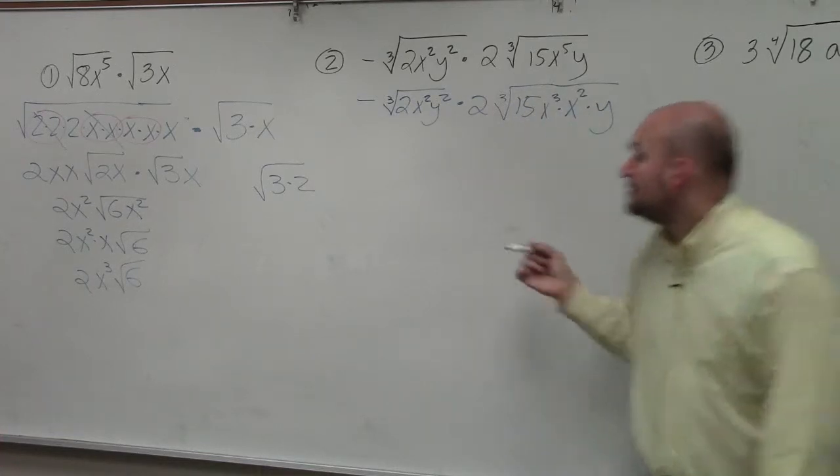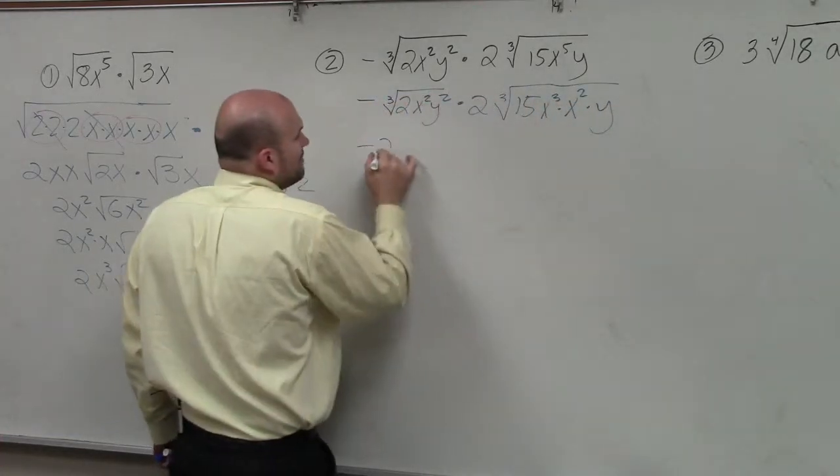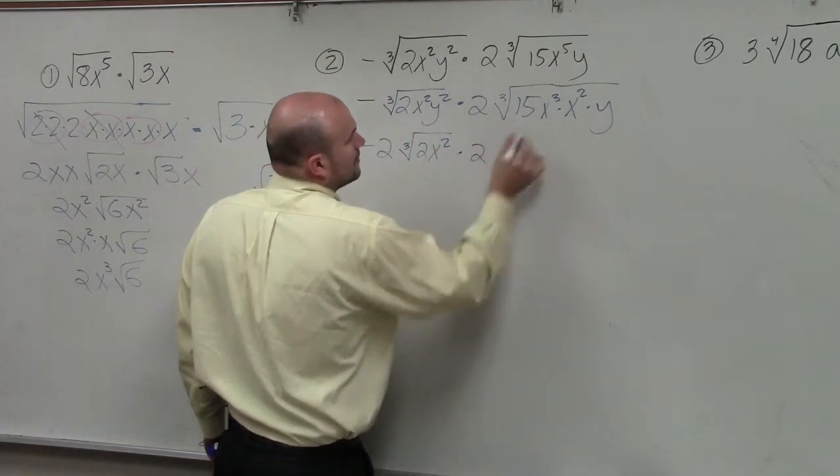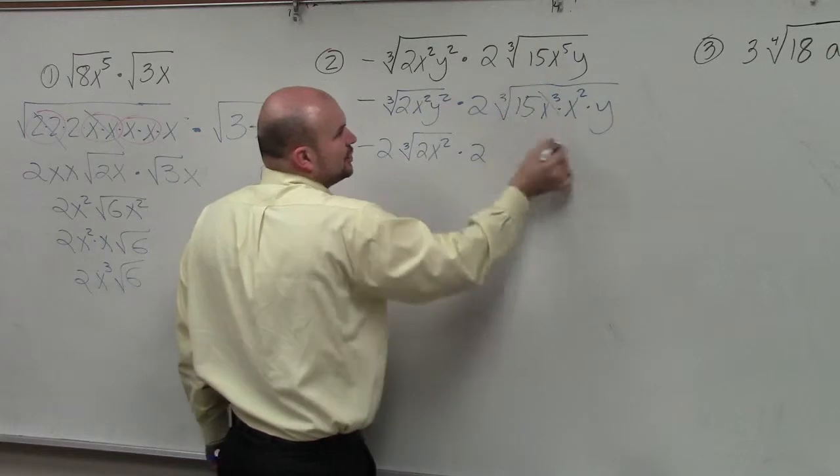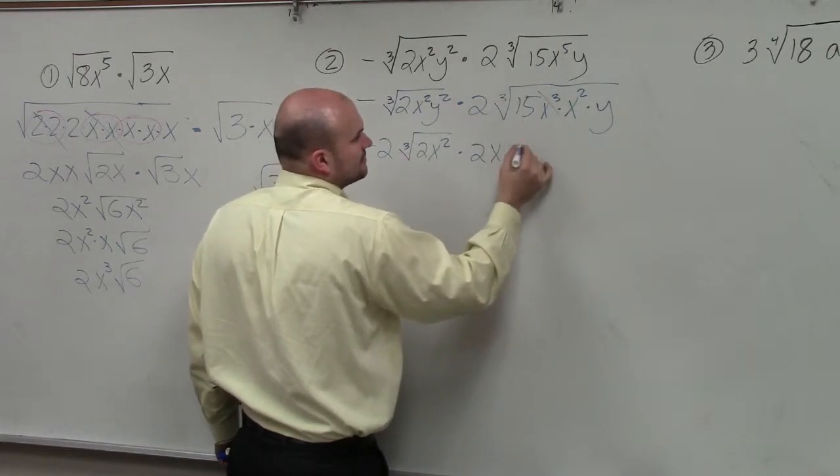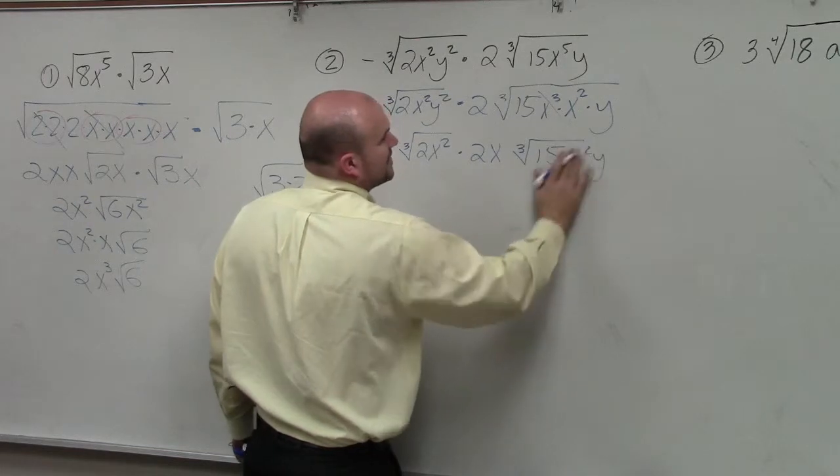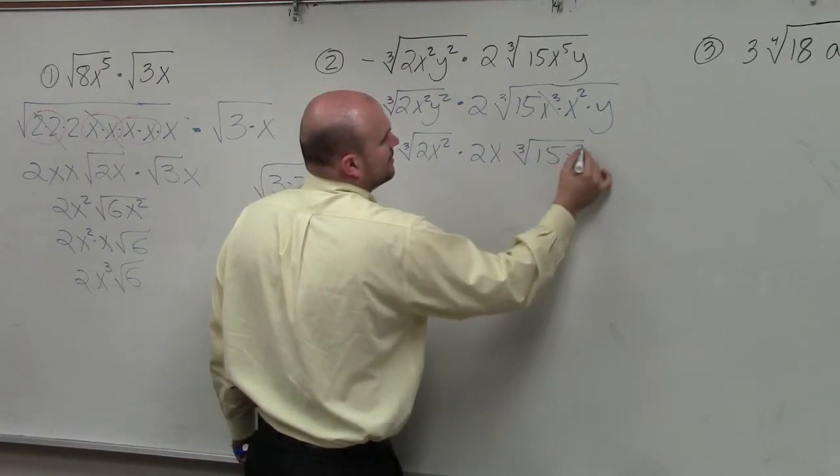That's equal to x. So before I multiply, I simplify. The cube root of x cubed is just going to be x 15x squared. I'm sorry, 15, yep, x squared y.